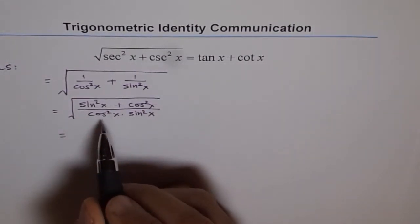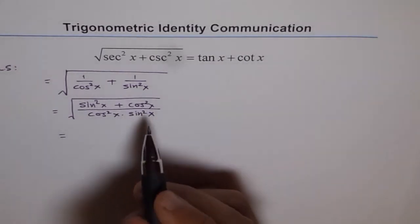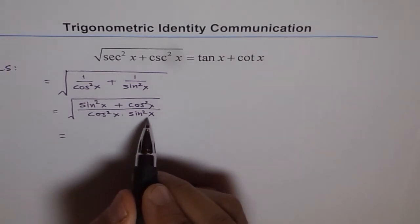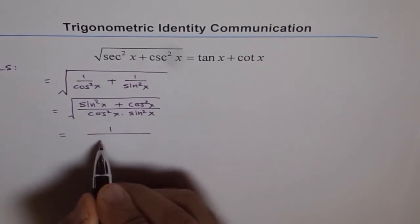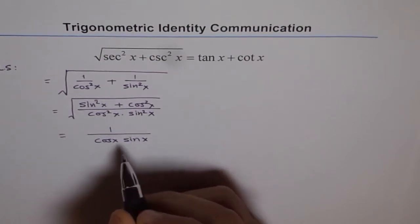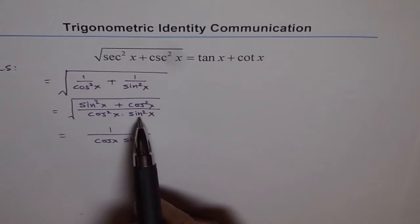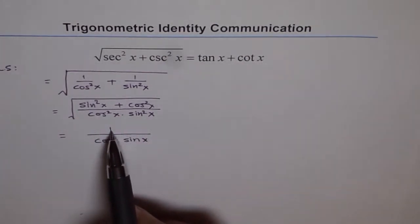Now, you know Pythagorean identity sine square x plus cos square x is 1. So we get 1 in the numerator and denominator is square root of cos square x. So we get 1 over cos x sine x. Because square root of cos square is cos x, sine square is sine x and sine square x plus cos square x is 1. Square root of 1 is 1.